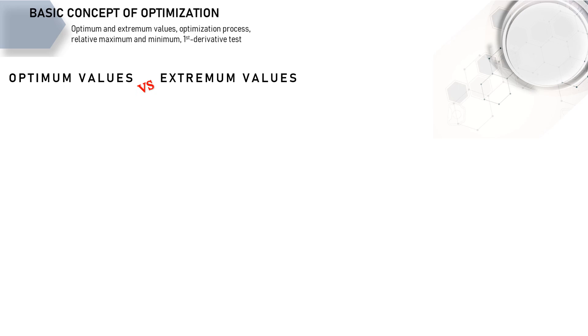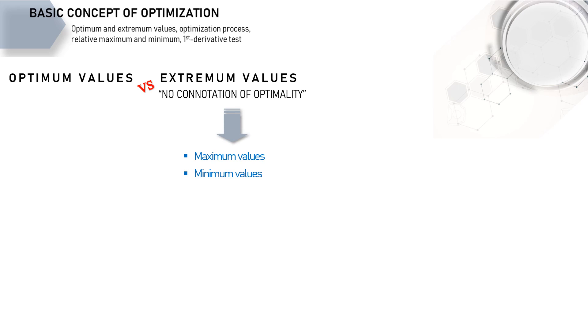To begin with, let's distinguish the difference between optimum and extremum values. In math, what is known is the extremum value — it has no connotation of optimality whatsoever. On the other hand, when we try to achieve one particular objective, the best possible outcome for our objective is the optimum value.